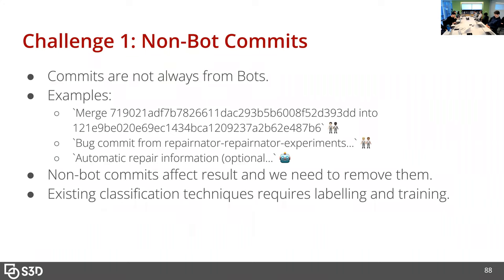We analyzed and classified commits from that program repair bot. The first challenge was that after manual analysis of a sampled commit, we noticed there are non-bot commits in the bot's data. For example, there are three types of commit messages from the bot's account: 'Merge this commit to another one' — clearly from a human; 'Bug commit from this project injected to this project' — also clearly from a human; and 'Automated repair information...' — actually from the bot. Non-bot commits affect results because we want to understand what bugs are actually fixed by the bot itself, so we needed to remove them.